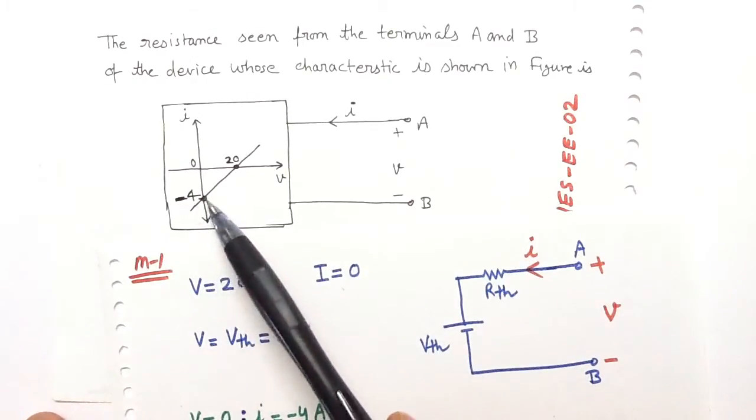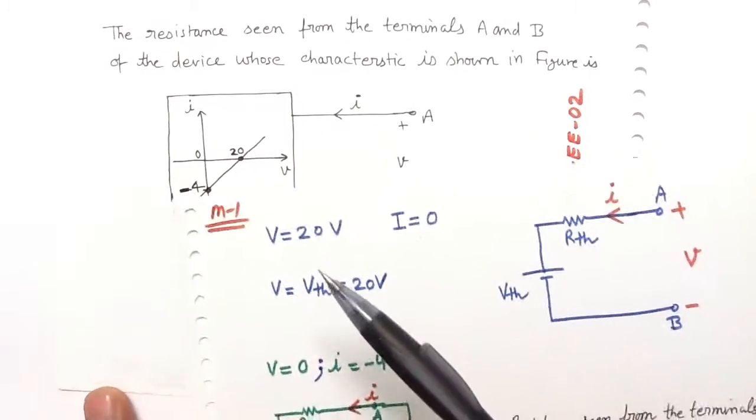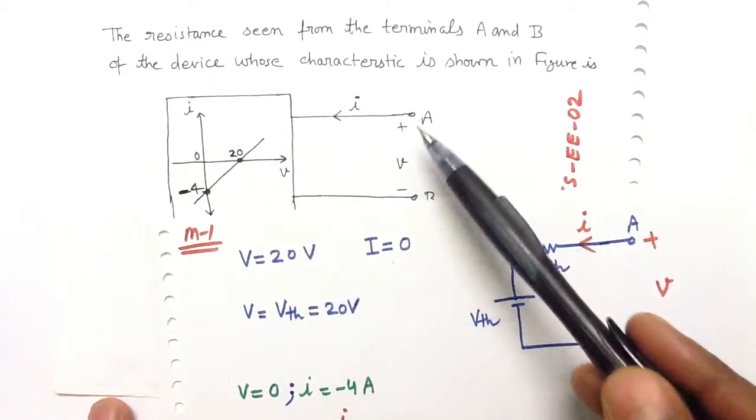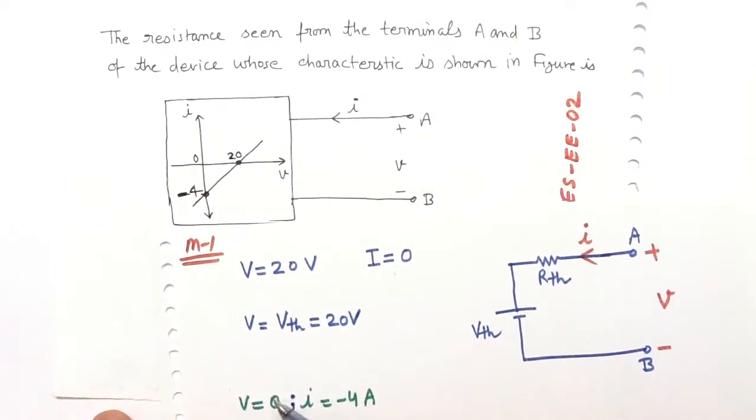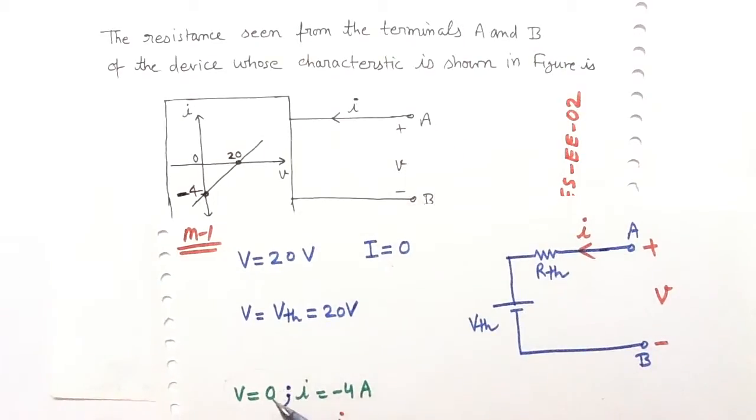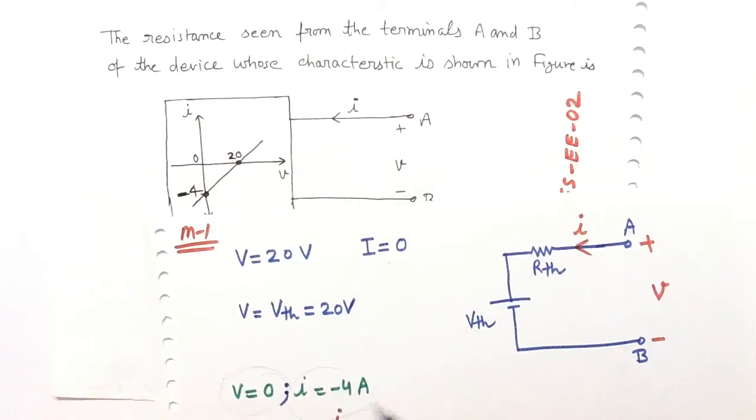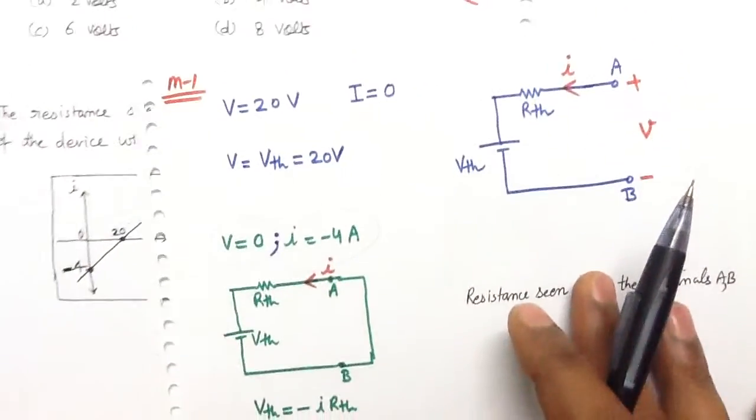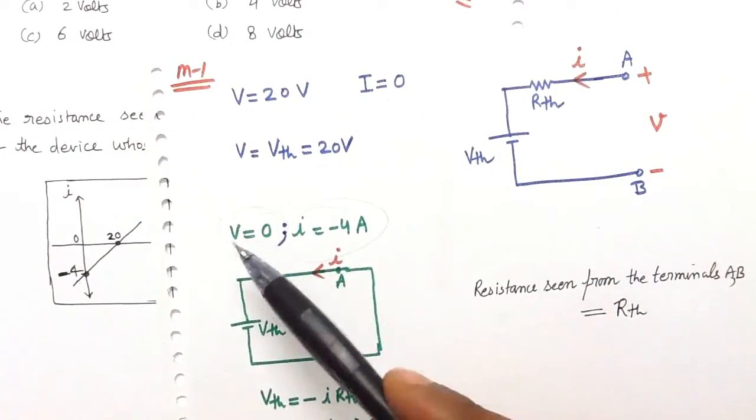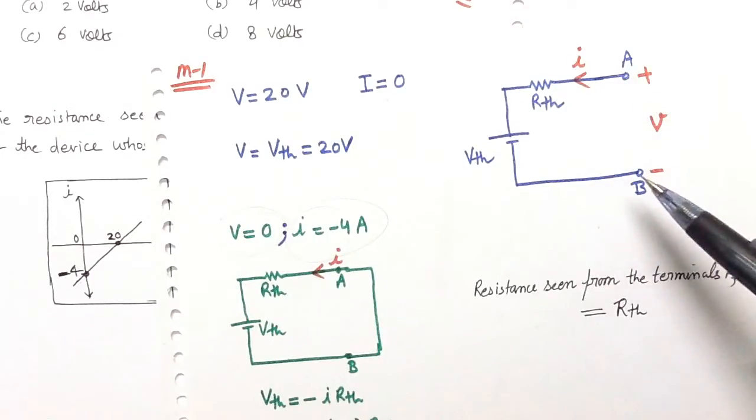If we look at this point, then we can say that voltage drop between the points A and B will be 0, then the current I will be minus 4A. When voltage drop is 0.